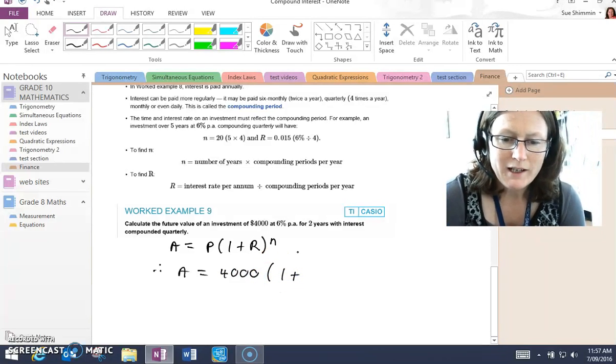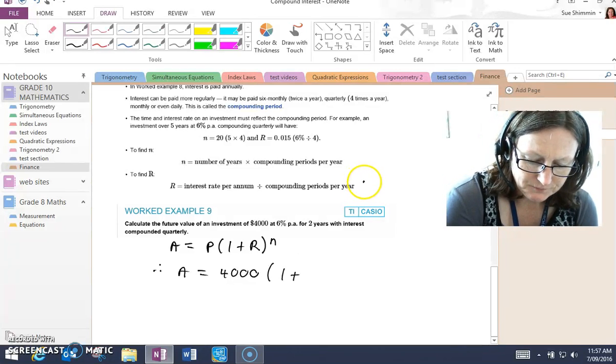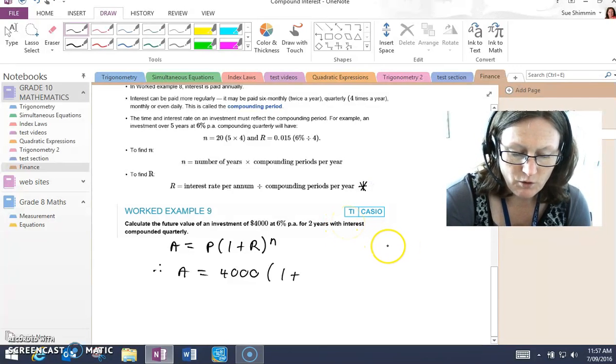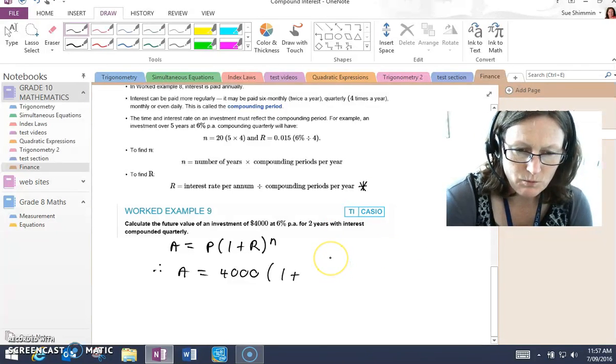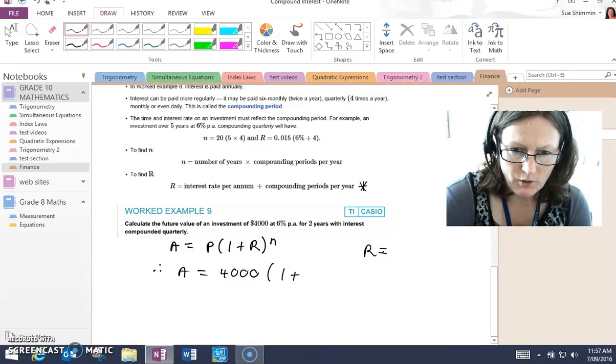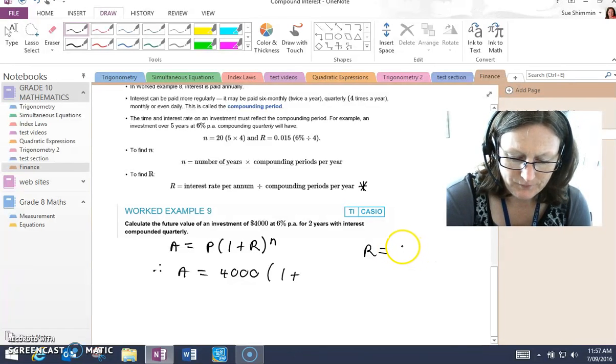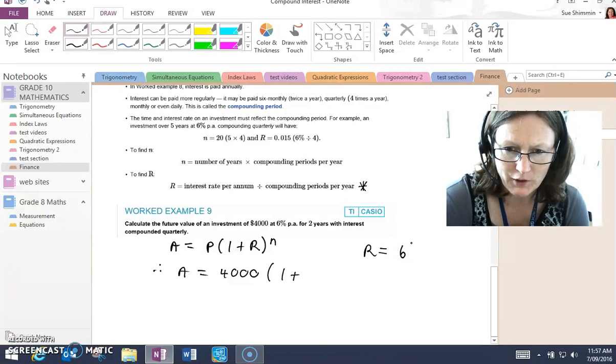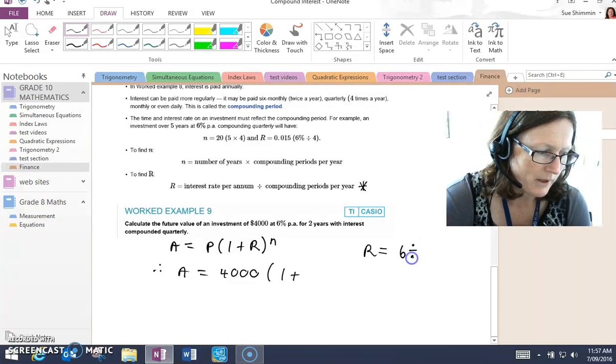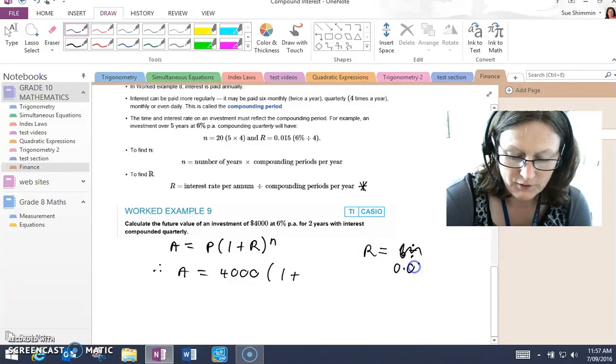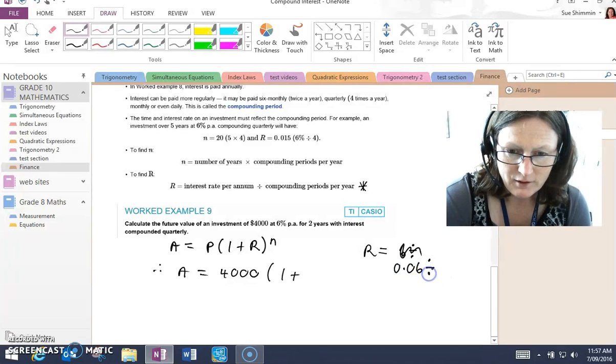Now the rate is 6%. If you look up here, the rate is 6% for two years with interest compounded quarterly. To work out the rate, we get the rate per annum, which is 6%.